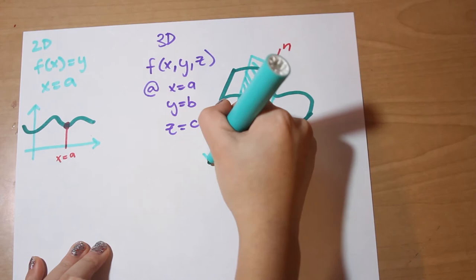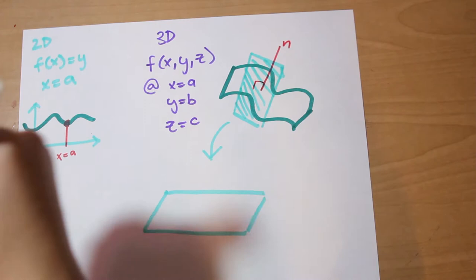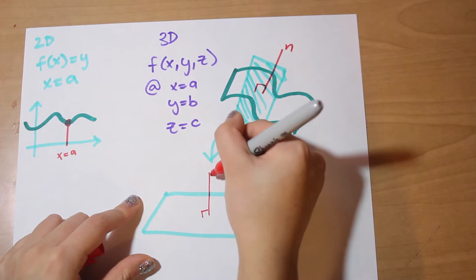So this line n, it's perpendicular to what would be the tangent plane at the point here. Another way to say this is that n is orthogonal, or normal to the tangent plane, that I named Timothy.